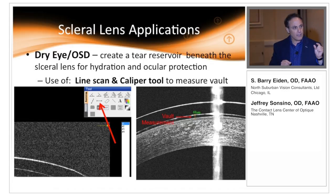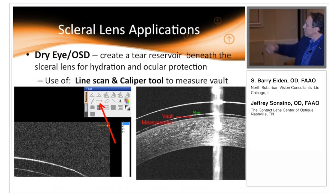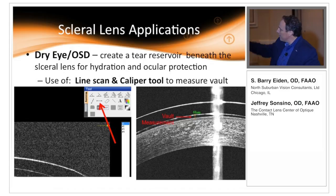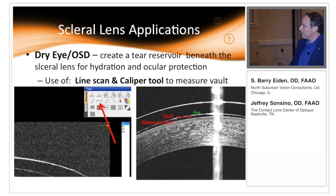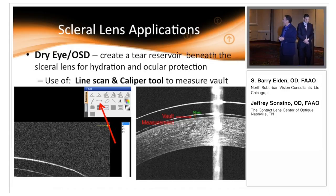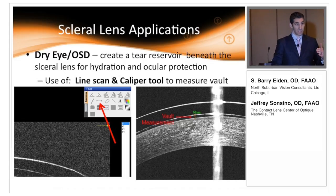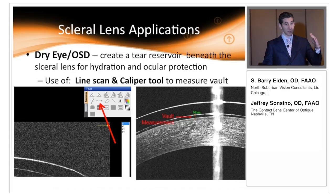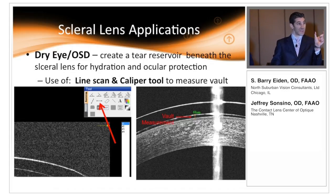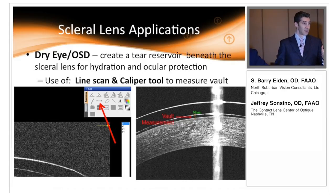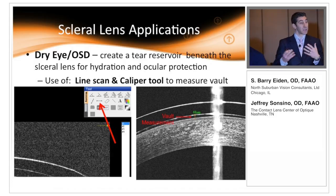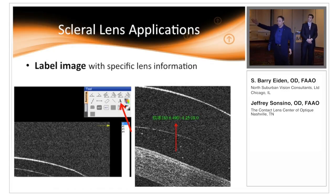Here we can see the classic measurement tool — that little line we use to measure in microns the exact vault. On the right you can see 68 microns of vault in that particular area. We use the caliper tool not only for measuring vault but also for measuring areas of bearing on the cornea — so if a scleral or hybrid lens is bearing, I measure that, and when I get the new lens I verify whether I cleared that area and am going in the right direction with parameter adjustments.